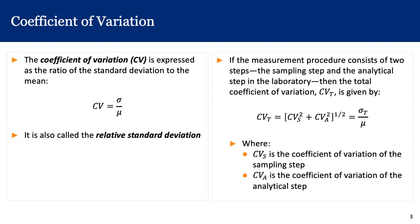In this formula, Cvs is the coefficient of variation of the sampling step, and Cva is the coefficient of variation of the analytical step.